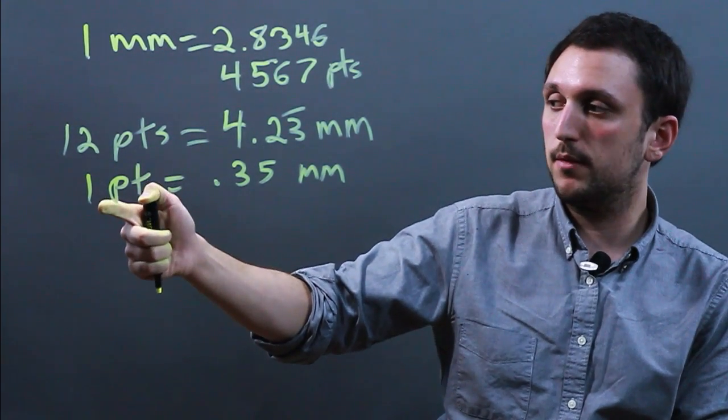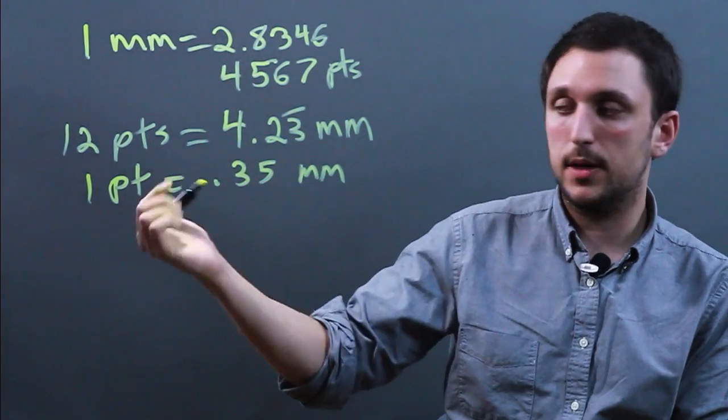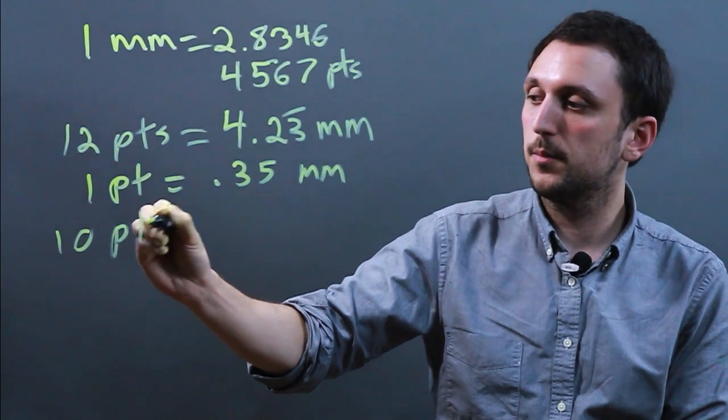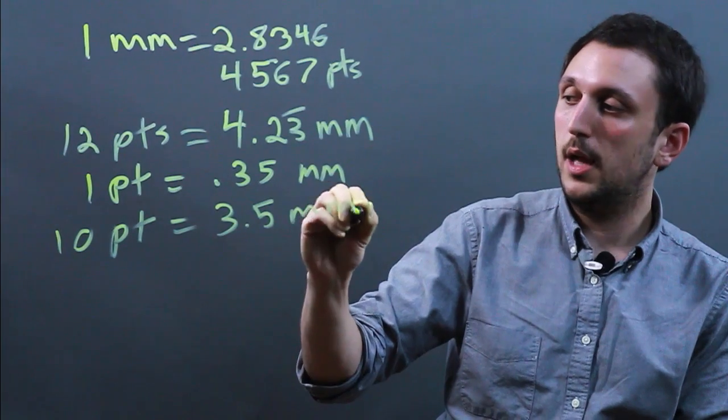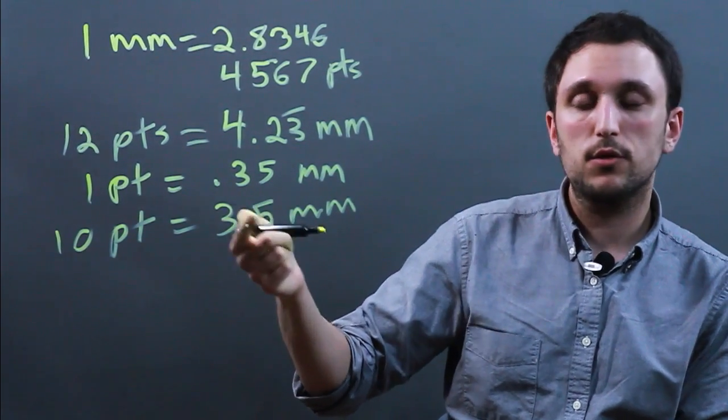So if you wanted to figure out 10-point font, you would multiply this by 10 and this by 10, and you'd get 3.5-ish millimeters.